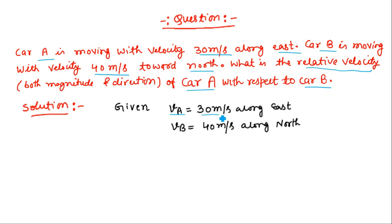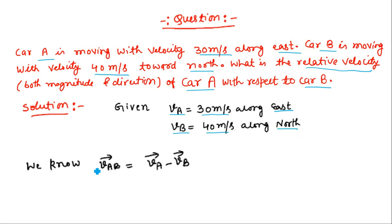Let VA be the velocity of car A — it is 30 meter per second along the east direction. Let VB be the velocity of car B — 40 meter per second along the north direction. We have to find the relative velocity of car A with respect to car B, that means we have to find VAB vector, which is equal to VA vector minus VB vector.